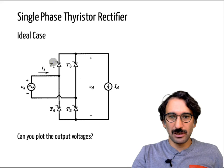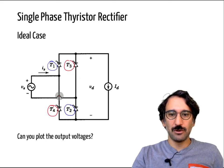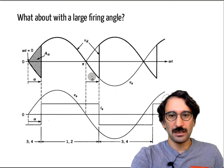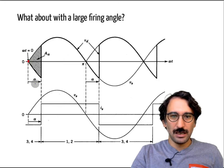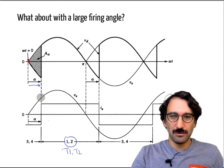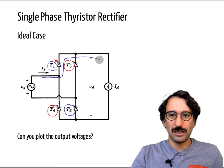The thyristors work in pairs — either T1 and T2 are working together, or T3 and T4 are working together. When we apply a gate signal, conduction will start and the other pair will be off. Alpha is measured from the instant the thyristor becomes forward biased. At the firing point, T1 and T2 are conducting — whenever Vs is positive and we apply gate signals, current flows through T1, through the current source, and back.